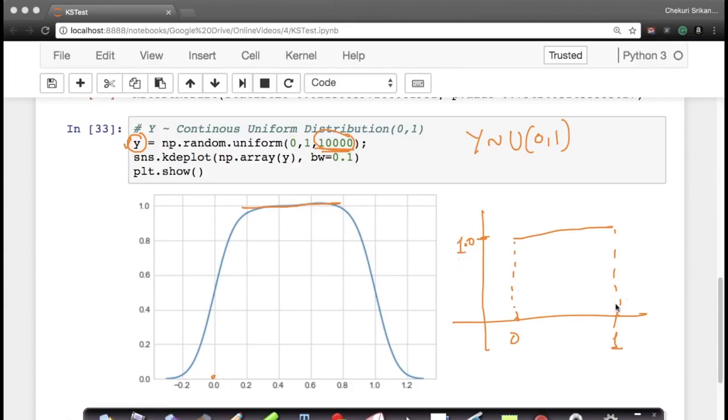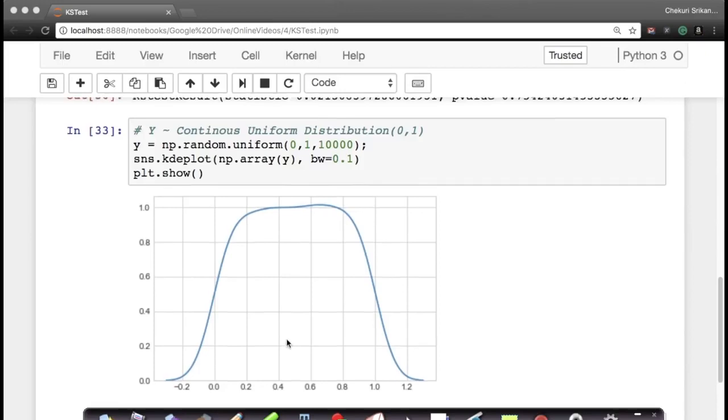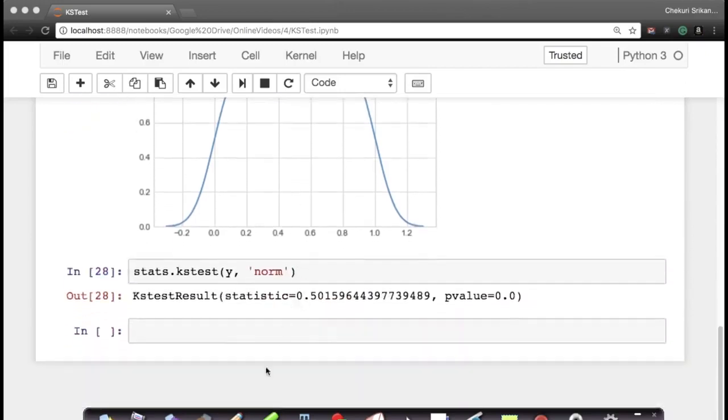Now, if you see the probability density function like this, now let's do KS test on the random variable y. So we're doing a KS test again between y and a normal distribution. And quickly, you'll realize that the p-value is 0, which means your y is not normally distributed.